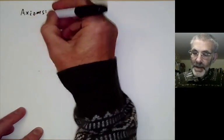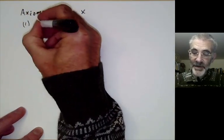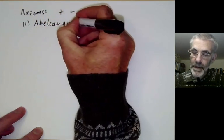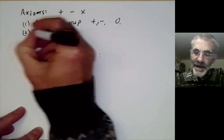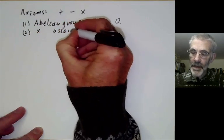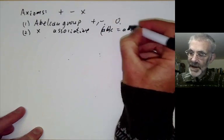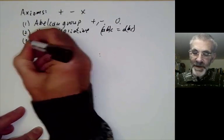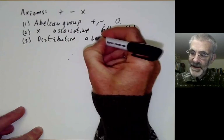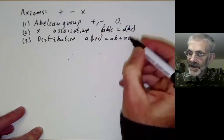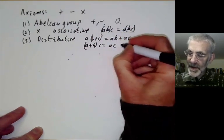First of all we have the operations plus, minus, times. The first axiom is that it's an abelian group under addition and subtraction, and of course there's a zero element. Secondly there's a multiplication that's associative: (ab)c = a(bc). Thirdly we have the distributive axioms: a(b+c) = ab + ac, and since our ring is not necessarily commutative we'd better put in the other one: (a+b)c = ac + bc.